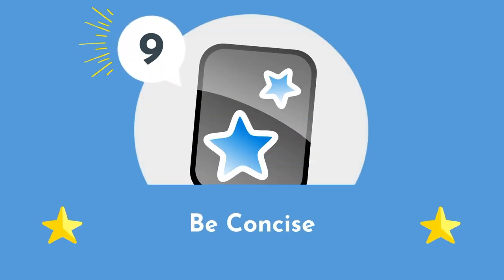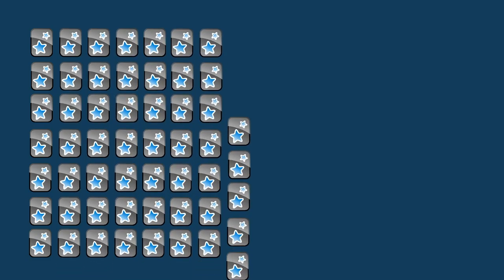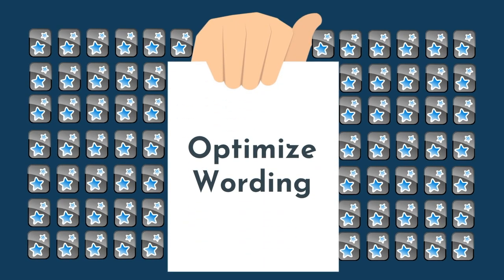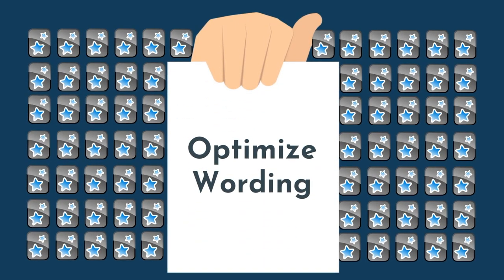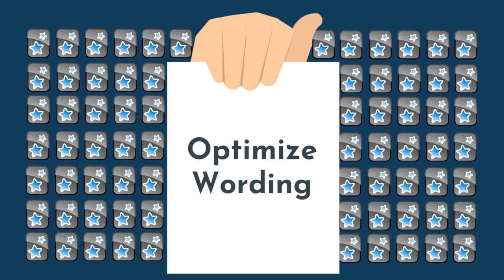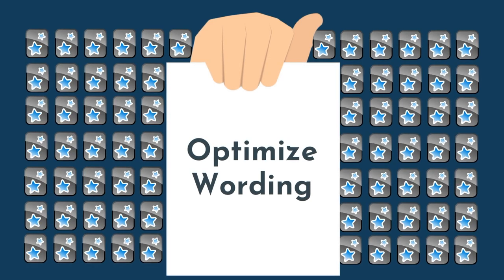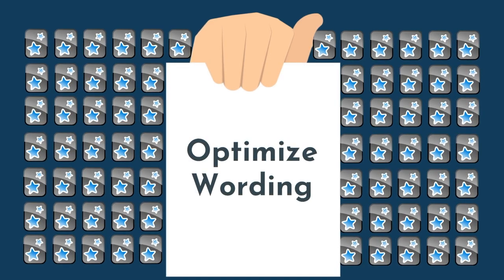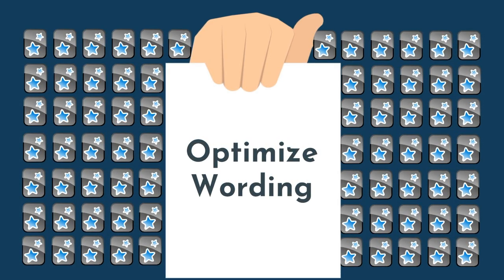Number 9: be concise. Brevity is your best friend. When you're reviewing hundreds of cards per day, a superfluous word here or there will quickly add up. For that reason, it is key that you optimize your wording. Focus on the exact information you need. The words before and after that information are going to be less important, so get rid of them.